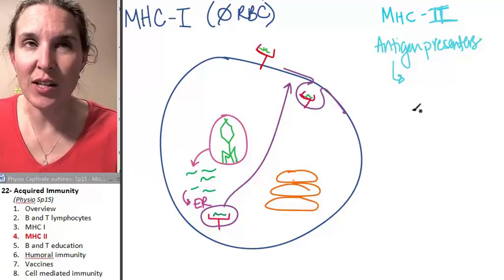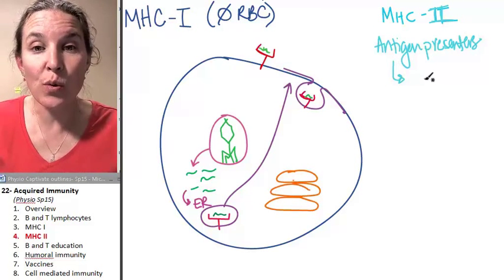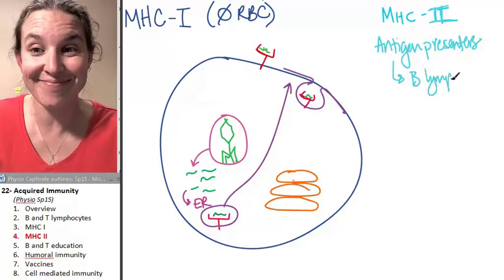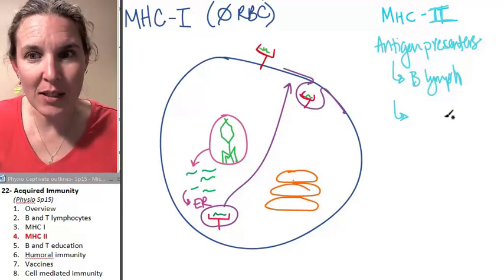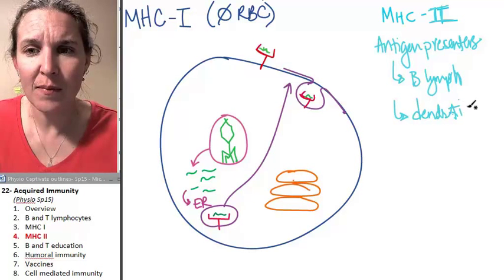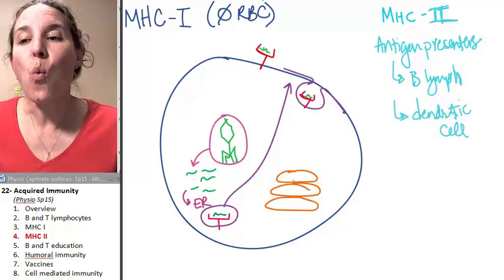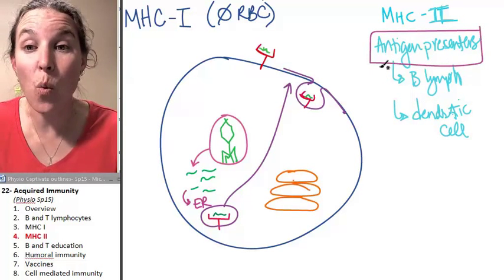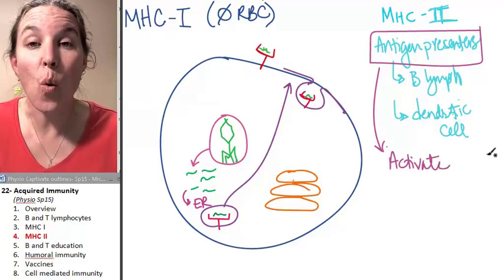Our two antigen presenters are B lymphocytes and a kind of white blood cell called a dendritic cell. Its whole job is to present antigens.